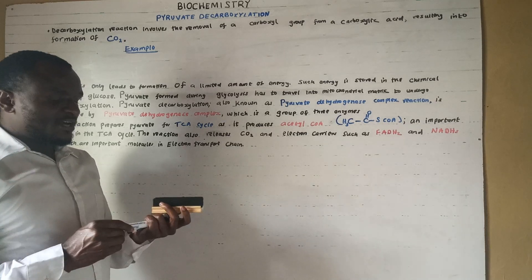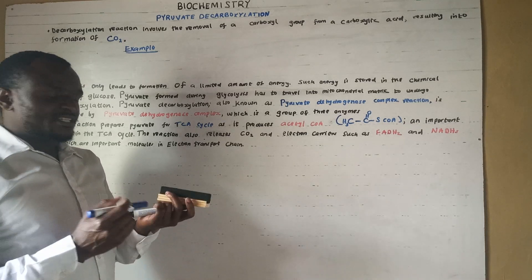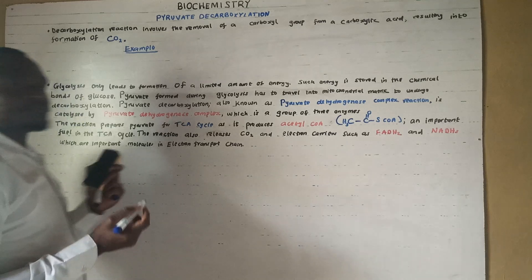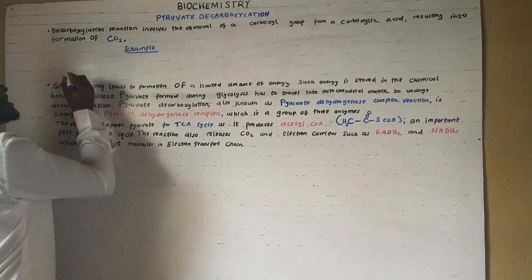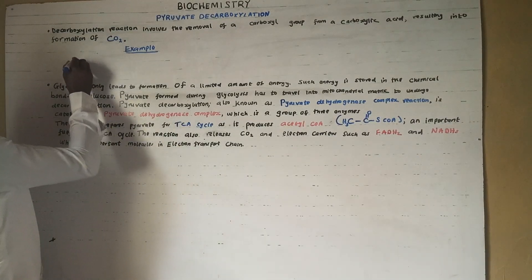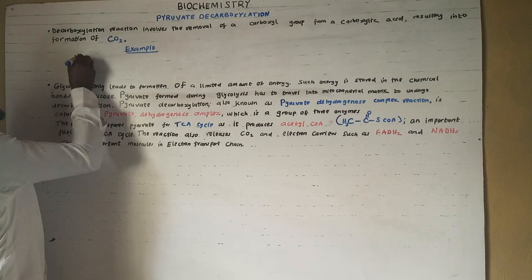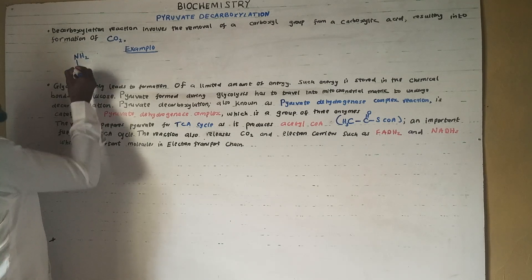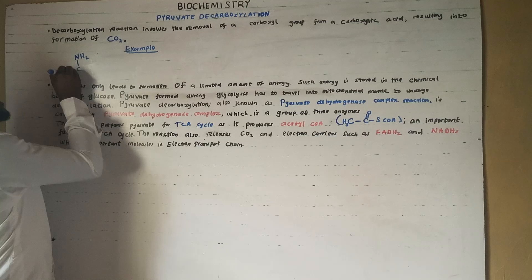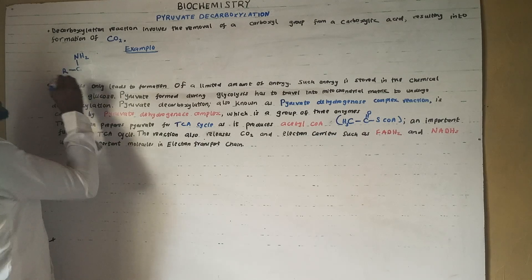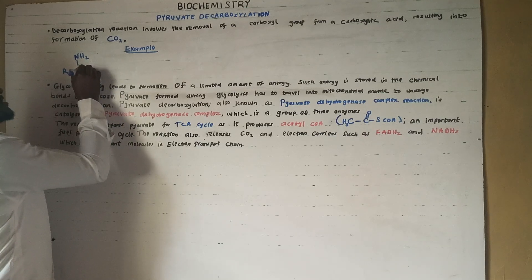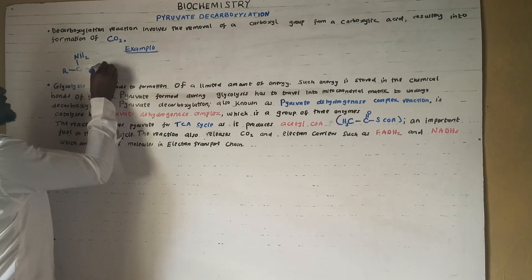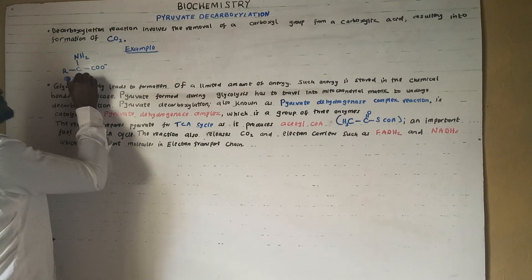Let me give you an example of decarboxylation using an amino acid. An amino acid has a general formula consisting of an amino group, a central carbon, a functional group, a carboxyl group, and a hydrogen atom.